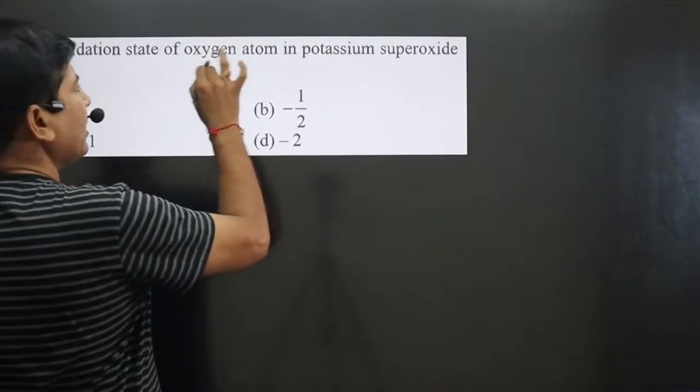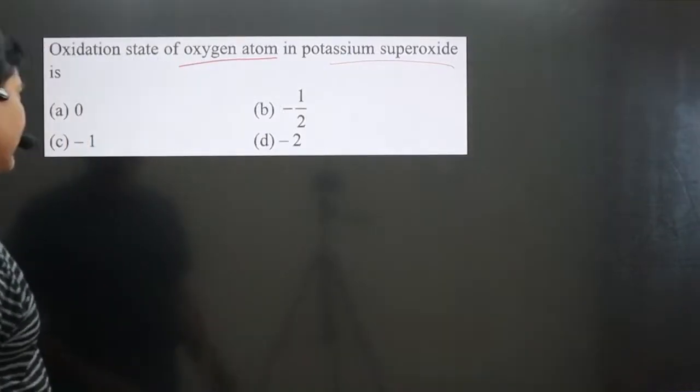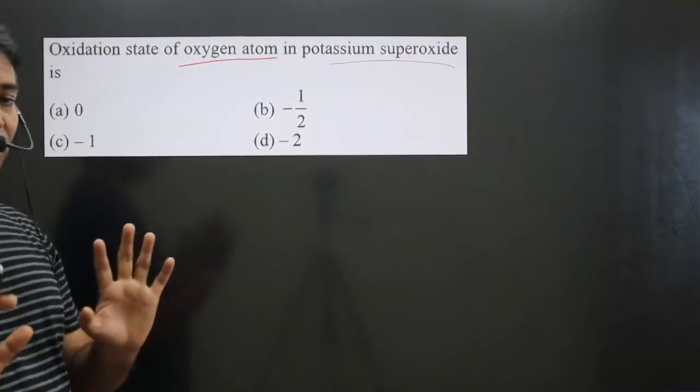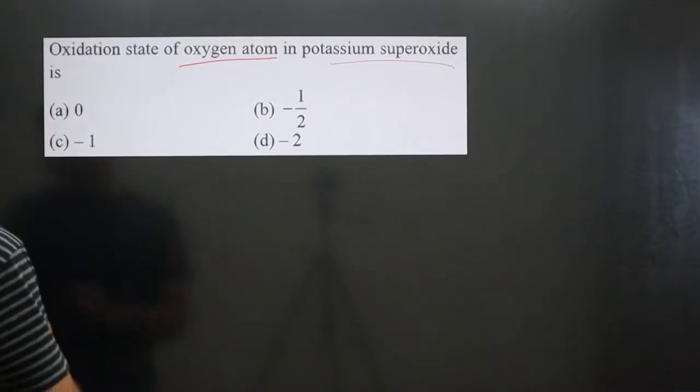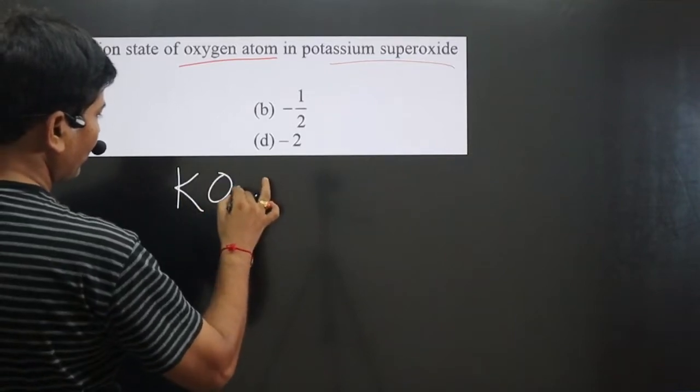The question asks for the oxidation state of oxygen atom in potassium superoxide. To calculate the oxidation number of oxygen atom in the superoxide, you must know the chemical formula, which is KO2.